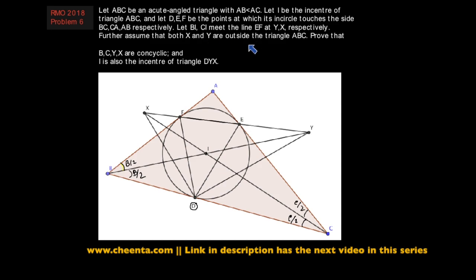The first thing we have to show is that B, C, Y, X are concyclic. The second thing is that I is the incenter of triangle DYX. Surprisingly, the second part is actually quite trivial — usually the second part is harder, but in this case it's straightforward. So let's do the second part first.